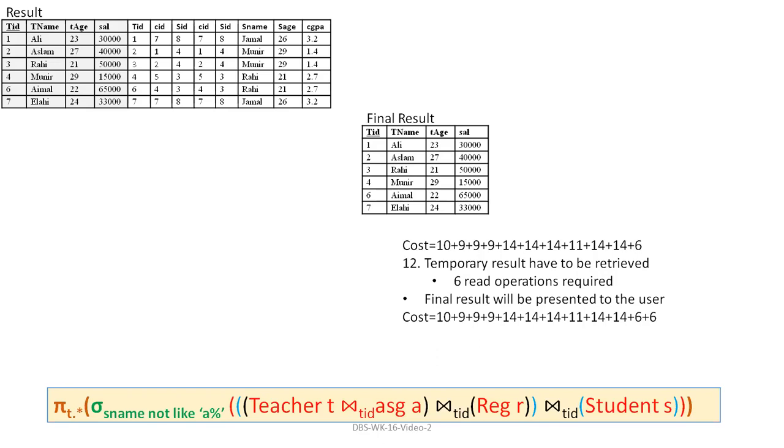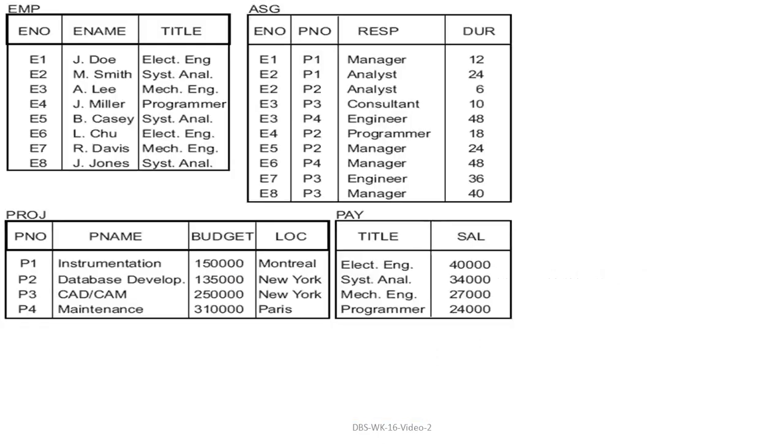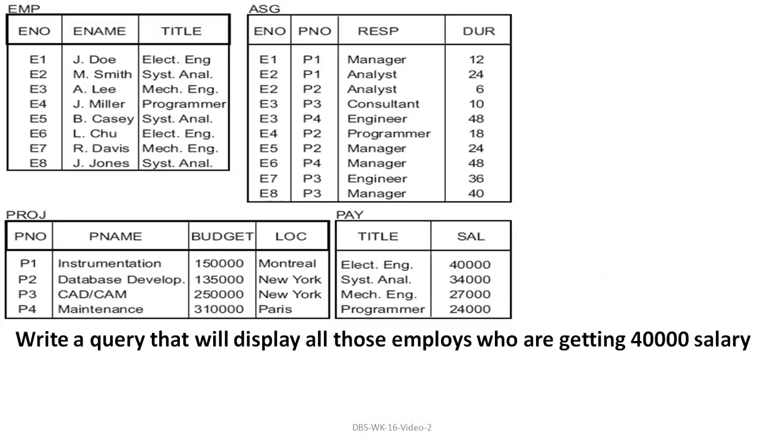Then on these 6 records, projection is applied: 6 are read again and projection is applied. The final result comes out — no further write needed. This gives us the total cost. This is what we call cost estimation.